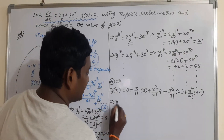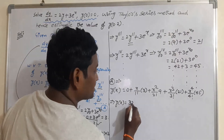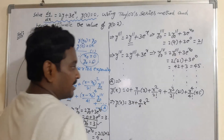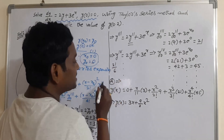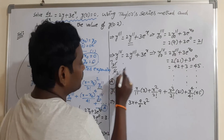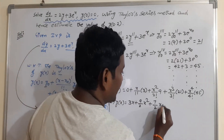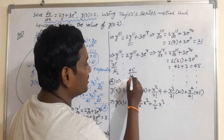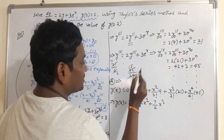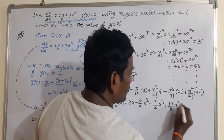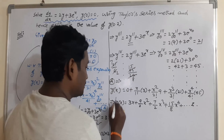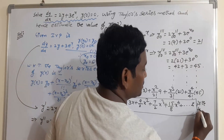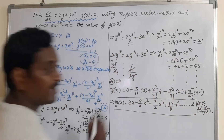Simplifying each term: 3x + (9/2)x² + (7/2)x³ + (15/8)x⁴ + ... and so on up to infinity. This is the solution of the given initial value problem 1.